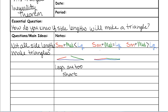In the second instance, when the small and medium legs added together are equal to the large, your small and medium together make the exact same length of line as your large leg, so you just end up with two lines rather than a triangle. The last instance is what you would consider a traditional triangle, where the small and the medium added together are bigger than the large — so they would actually make a true triangle.